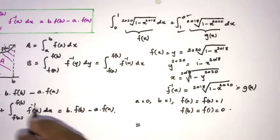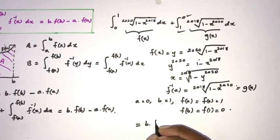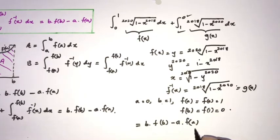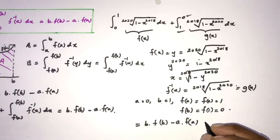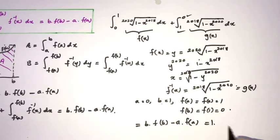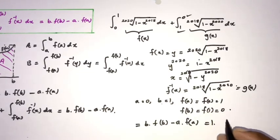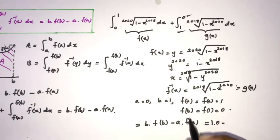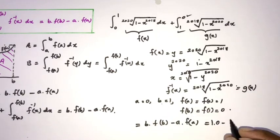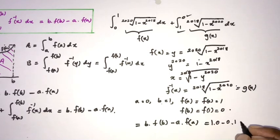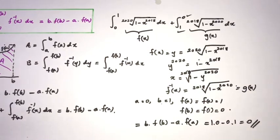Applying the formula, the answer is b times f(b) minus a times f(a). We know b = 1, f(b) = 0, a = 0, and f(a) = 1. So the result is 1 times 0 minus 0 times 1, which equals 0. The answer is 0. If you like this type of video please subscribe to the channel. Thank you for watching.